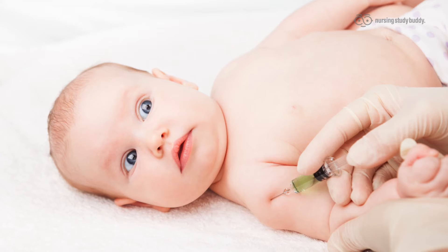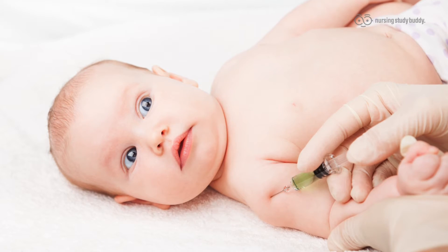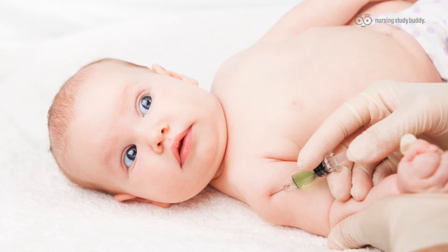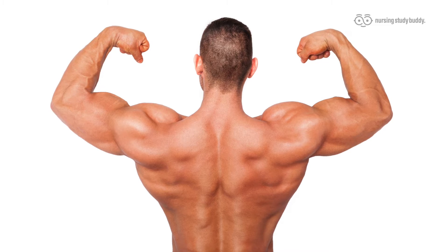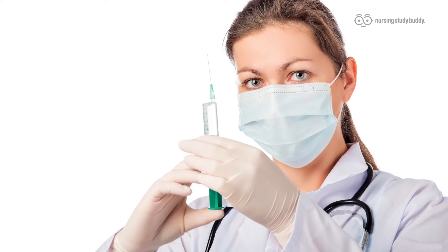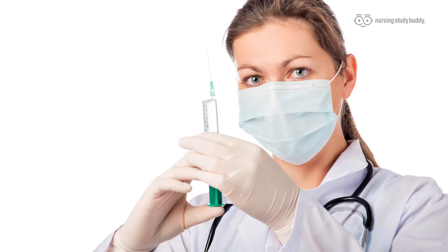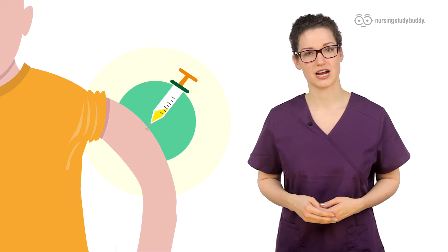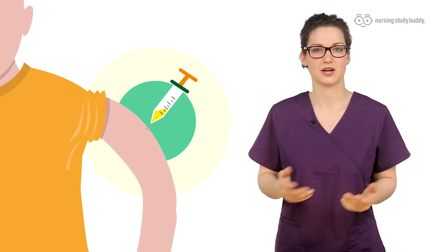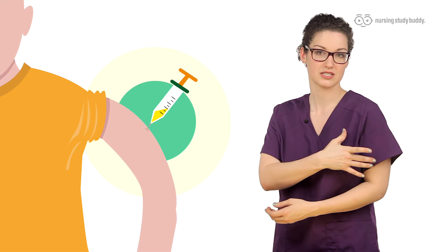Intramuscular injections, which you may be familiar with, are the route used often for steroids, antipsychotics, and some vaccines. You would use a large needle to inject all the way into the muscle, past the cutis. You would want to inject a largely muscular area, like the buttocks, thigh, or deltoids.